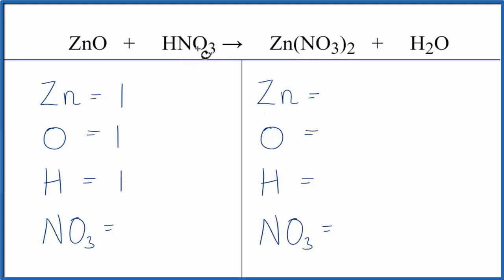So I can call this NO3 just one nitrate ion. On the product side, I have one zinc, one oxygen, two hydrogens, and then I have two nitrate ions here.